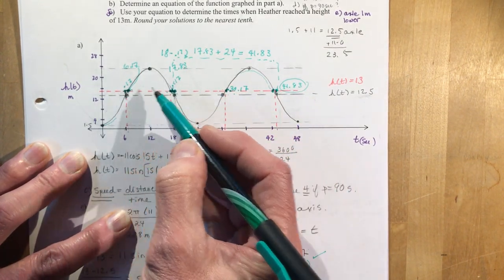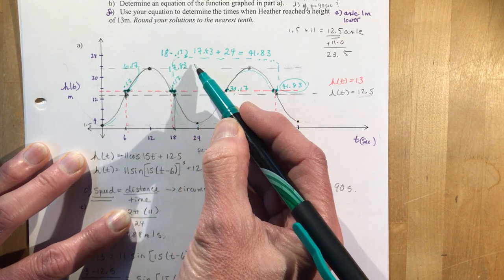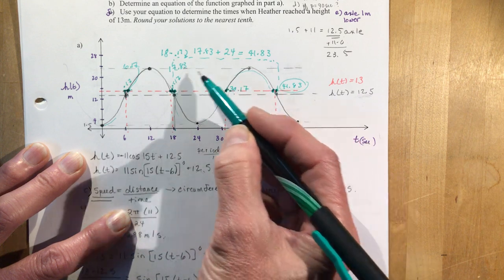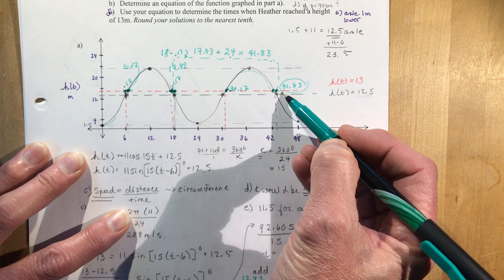So we have this one, this one, this one, and now to go from 17.83 to this point, we add one complete cycle, which is 24, giving us 41.83.